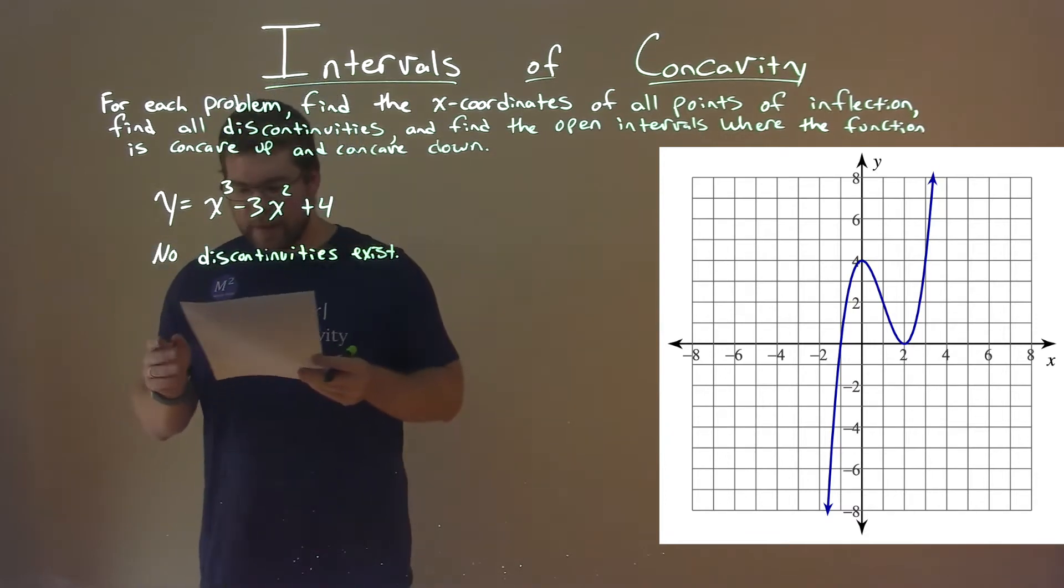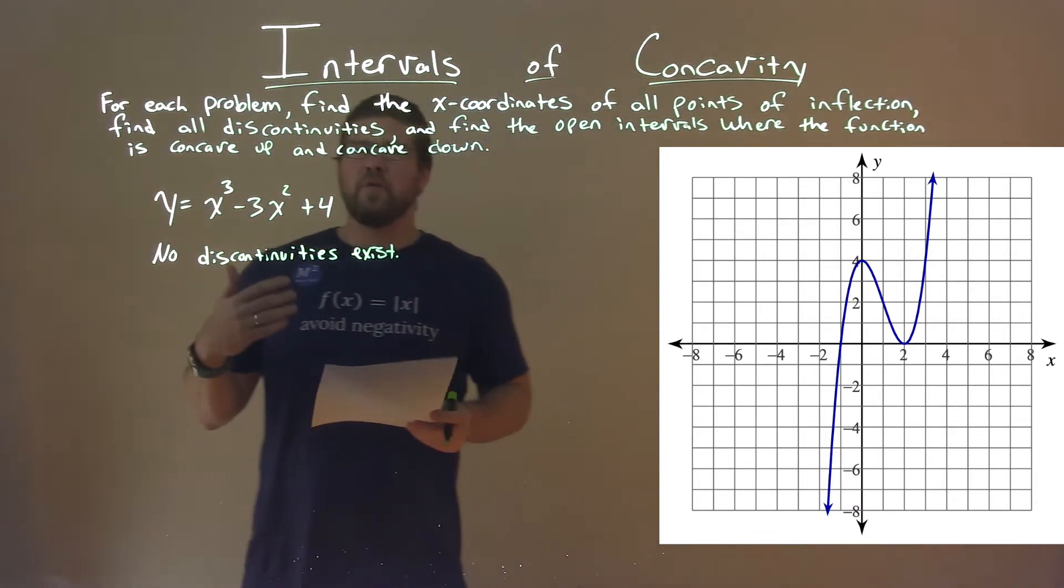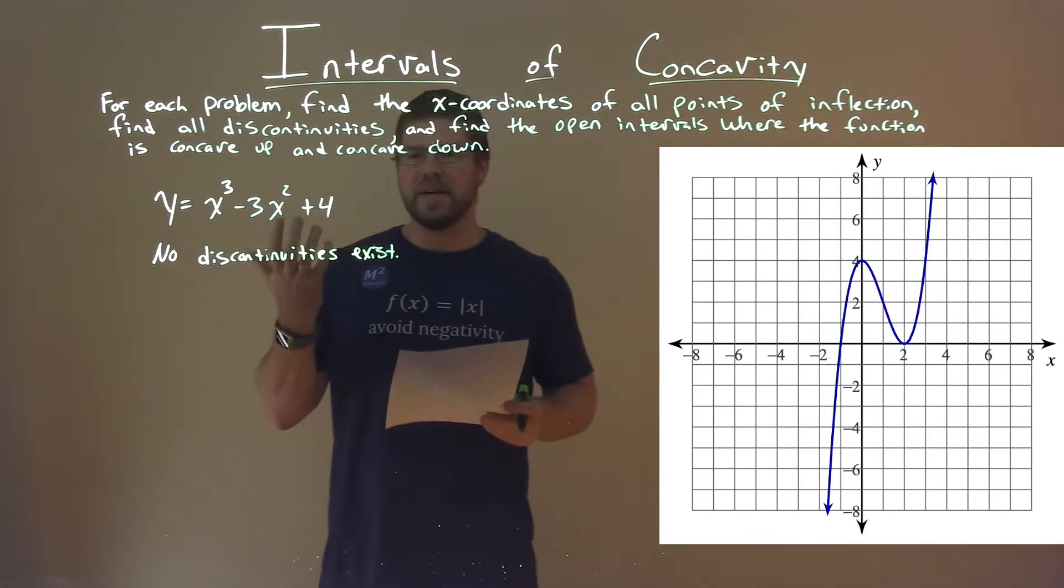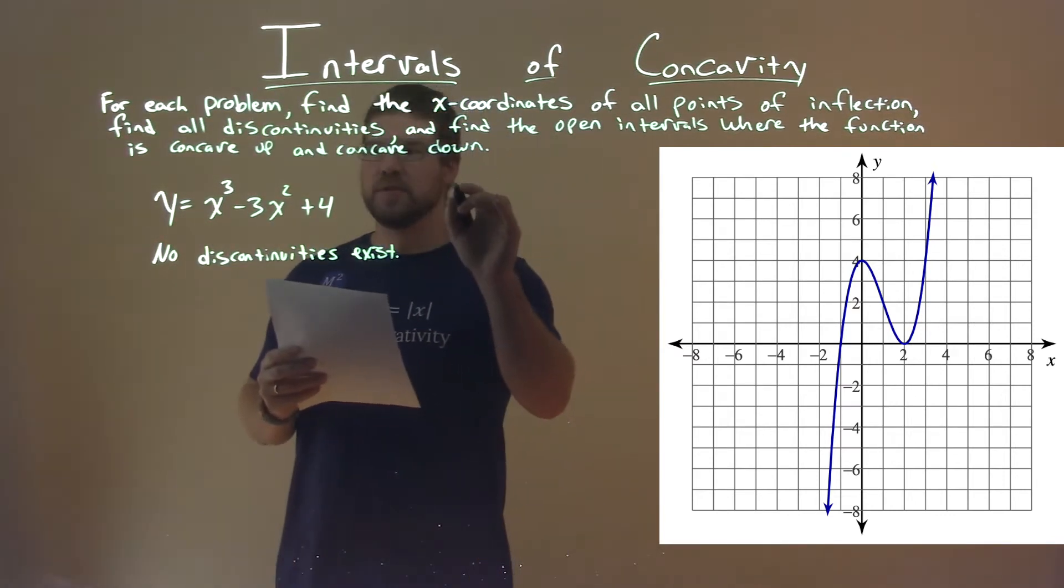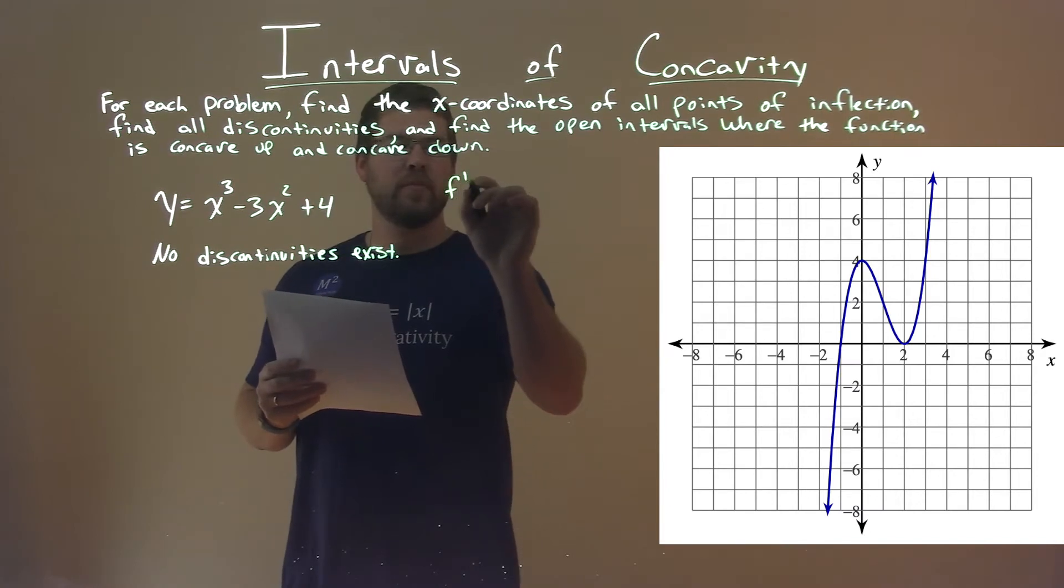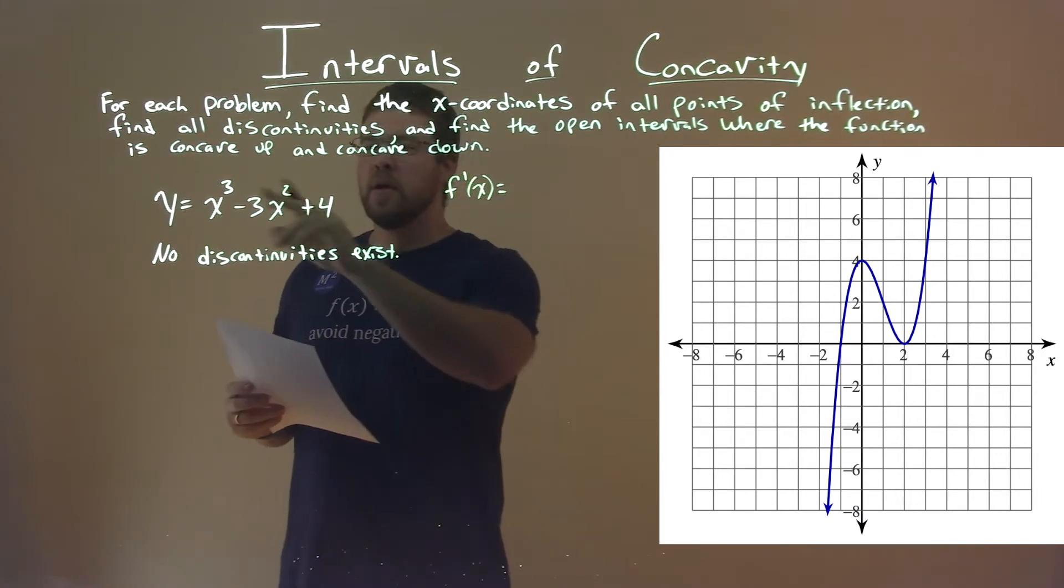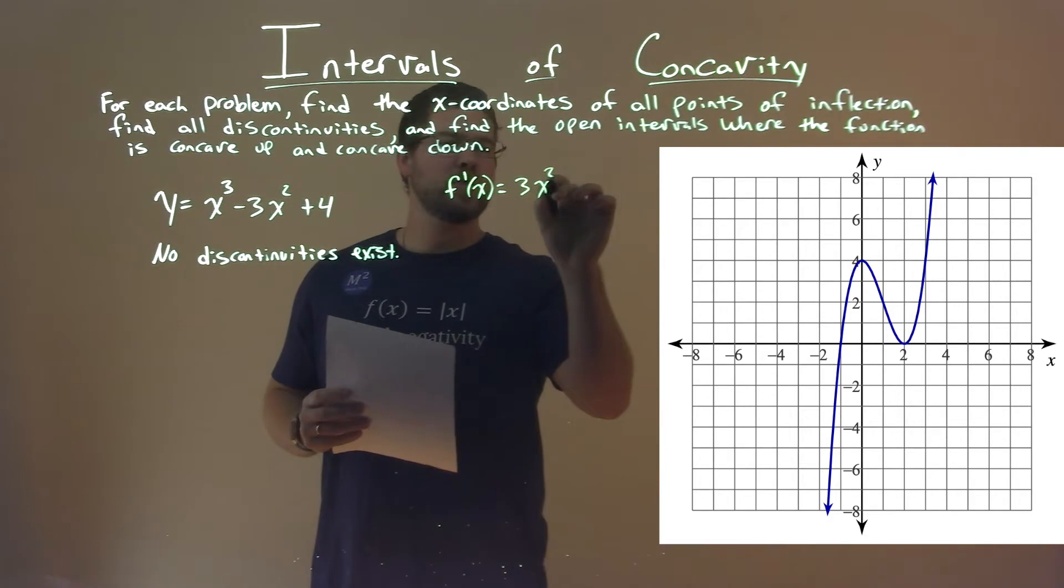Got that off the bat. All right, so to find our point of inflection, we need to take the second derivative. So, we'll take the first derivative, pretty easy, the power rule. f'(x) here: 3 comes down, 3x squared, minus 3 times, or 2 comes down, 6x, and derivative of the constant 4 is 0.